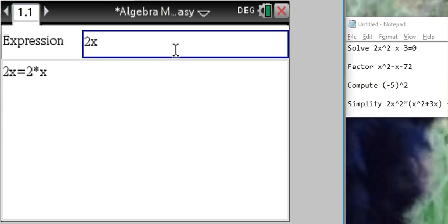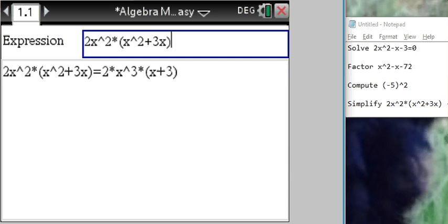2x² times quantity x² plus 3x. Well, it is simplified in the sense that we get a simplified version of 2x³ times x plus 3. So the x plus 3 is factored because that is what's left after factoring.